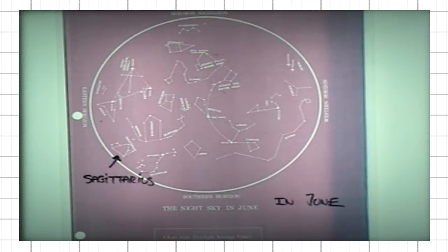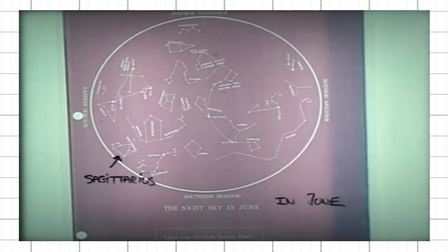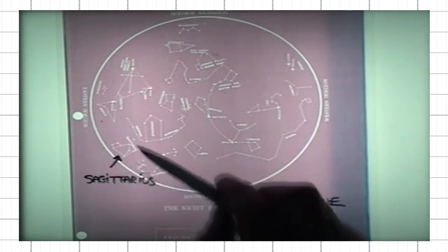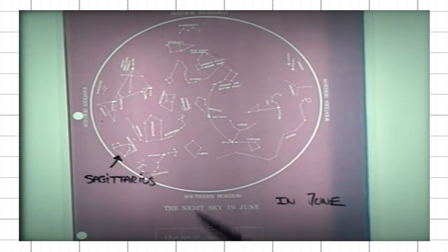What you see over a period of one month is that the old constellations, old meaning that they were visible before, they disappear in the western horizon. The new ones, like in this case Sagittarius, they appear in the eastern horizon.